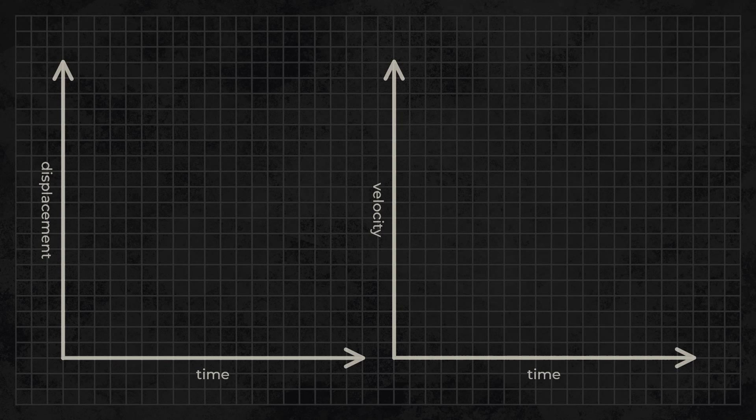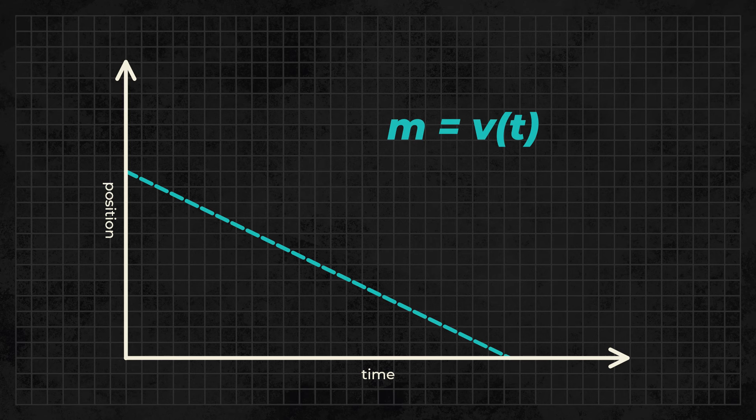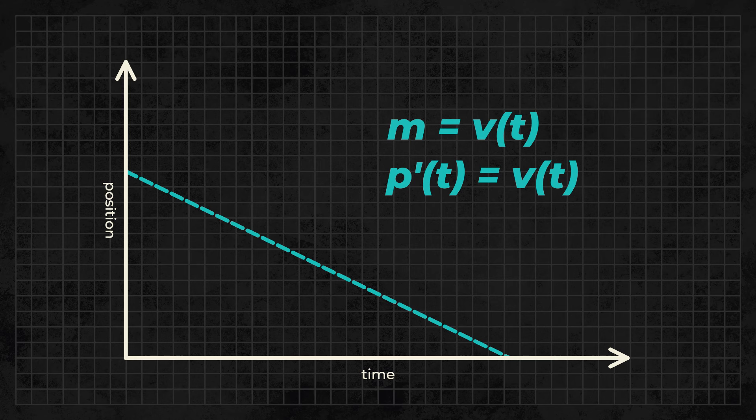A large part of this unit is studying position time and velocity time graphs. We'll start with position time graphs. On these graphs, position is in the vertical axis and time is in the horizontal axis. At any point, the slope of a position time graph is equal to the velocity of the object that it's tracking. If you've taken calculus, you'll understand this to mean that the derivative of a position time graph is a velocity time graph.